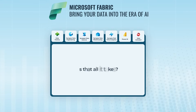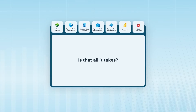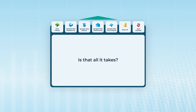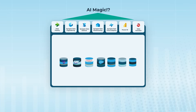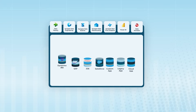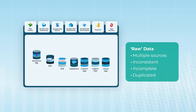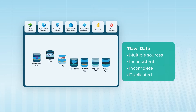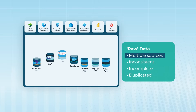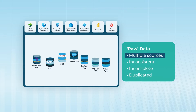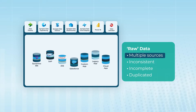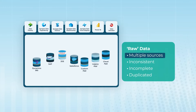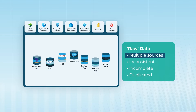So is that all it takes? Just install Fabric, import your data, and you are AI-enabled? Well, not exactly. Enterprise data generally comes from many different sources, and the data in each source was created by different people at different times for different purposes.